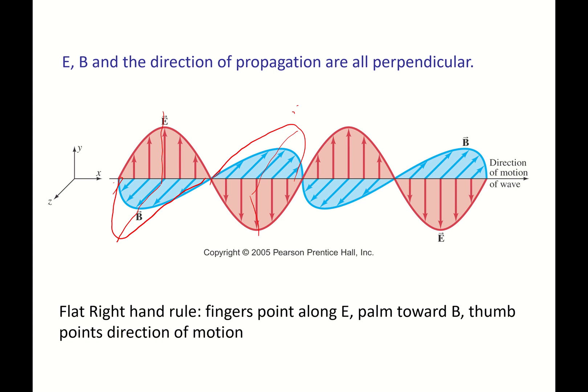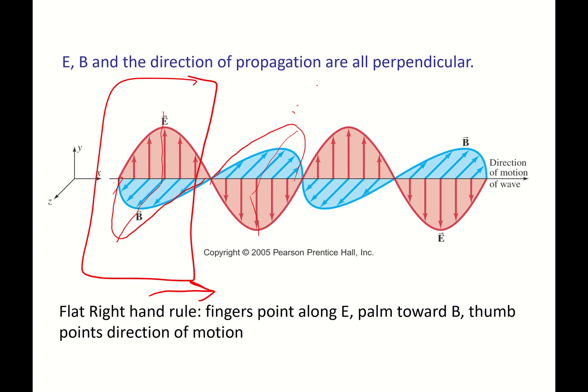We can figure out the direction the wave moves using the flat right-hand rule. Take your right hand flat, point your fingers along the direction of the electric field — so fingers up towards the ceiling — then rotate your hand so your palm faces the direction of the magnetic field (out), and your thumb should point to the right. Doing it at the second point with fingers down and palm into the screen, the thumb also points in the same direction. Make sure you can sketch the electric and magnetic fields for an electromagnetic wave and apply the right-hand rule.